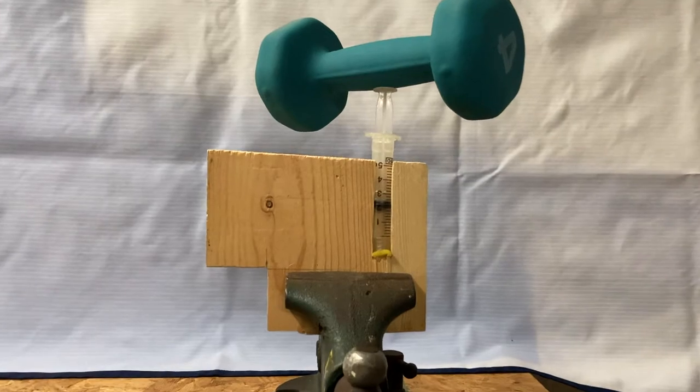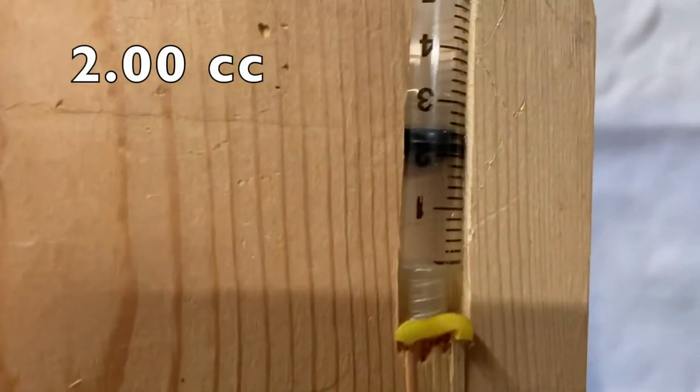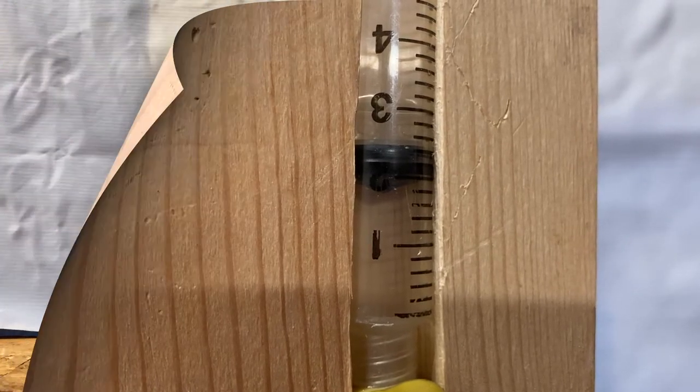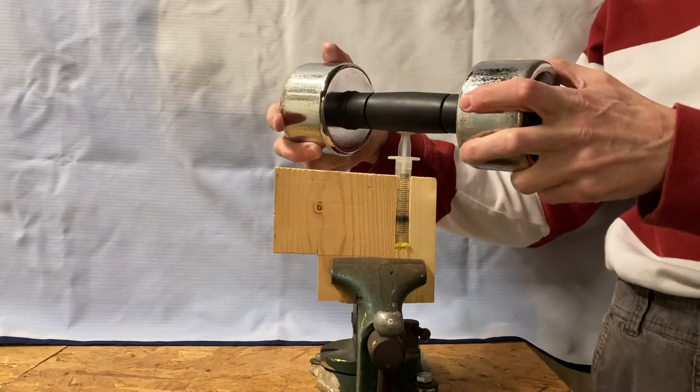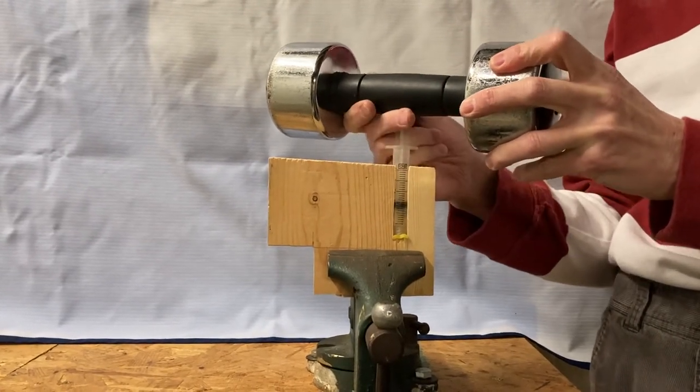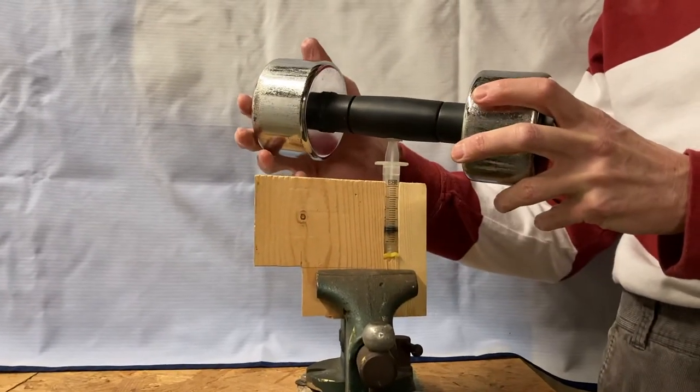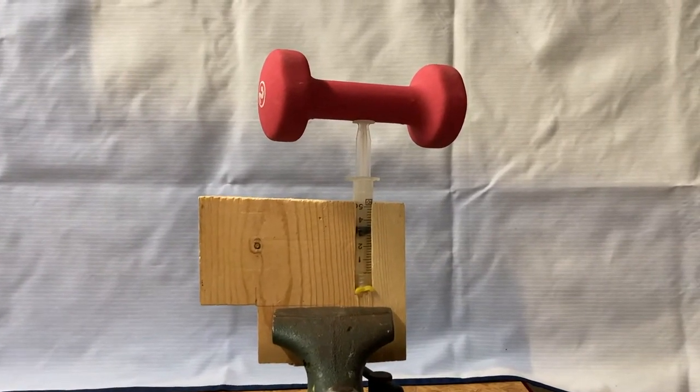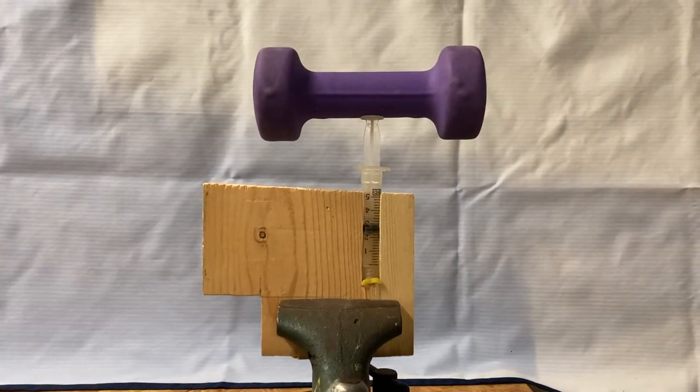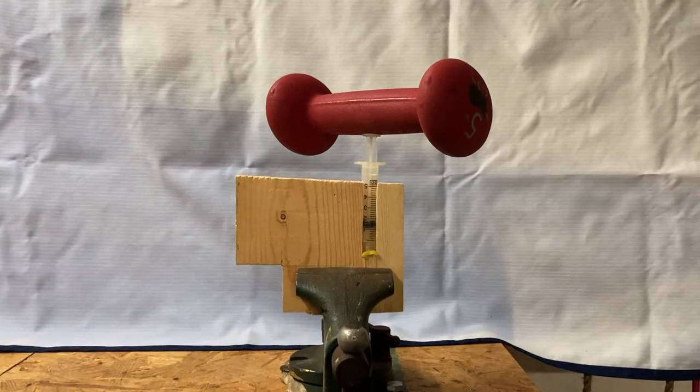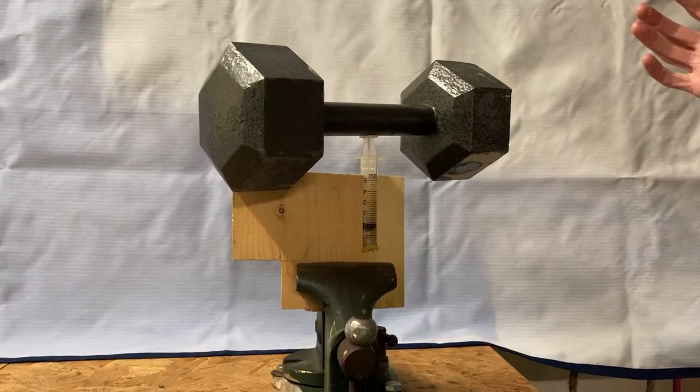Once the weight is balanced on the syringe plunger, read the volume in the syringe. Repeat for multiple different weights and remember to record both the weight and the volume in the syringe every time. Also, make sure every time you're putting on a new weight, you're resetting the syringe by unplugging the bottom and moving the plunger back to the maximum volume marking. Otherwise, air will leak out from the syringe over time.